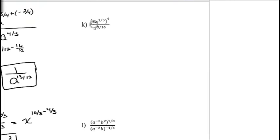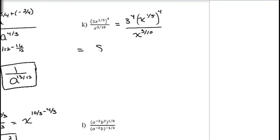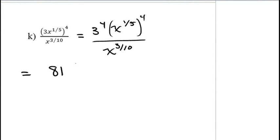For (3x to the 1/5) all raised to the 4th, divided by x to the 3/10: raise each factor — 3 to the 4th is 81, and x to the 1/5 raised to the 4th means multiplying exponents: 1/5 times 4 equals 4/5. So the numerator is 81x to the 4/5, divided by x to the 3/10.